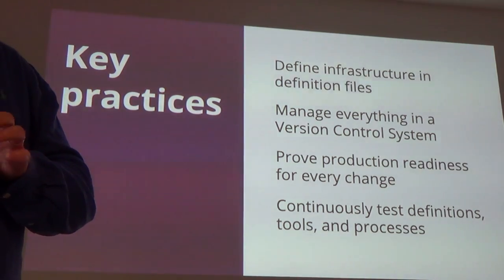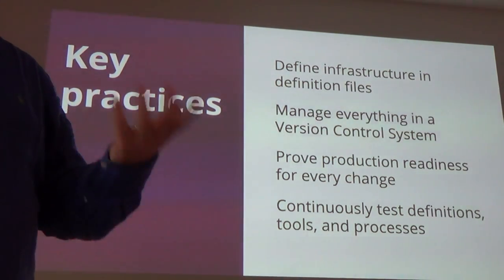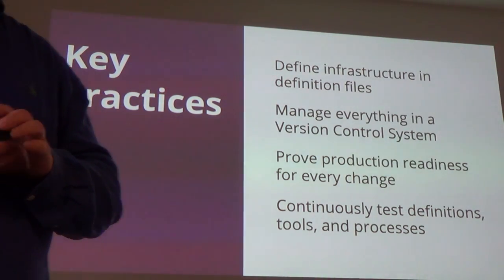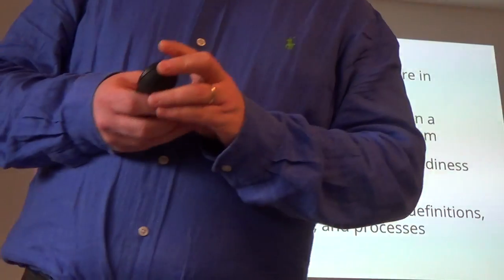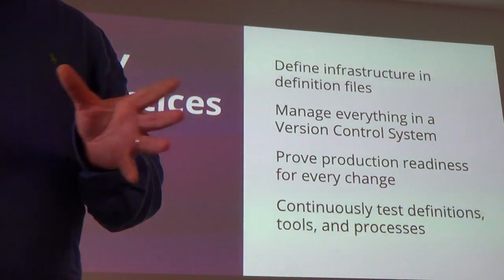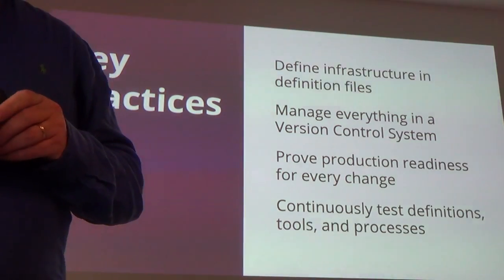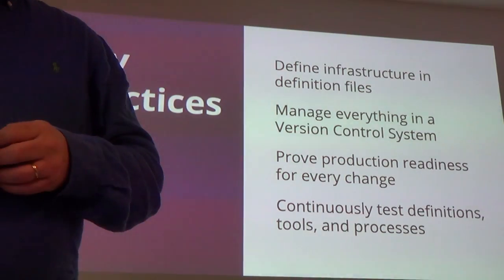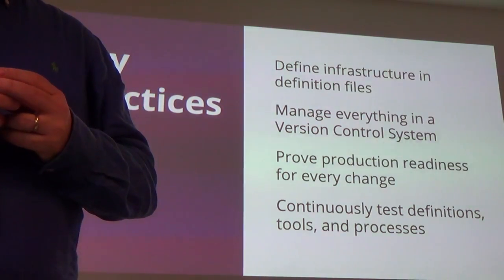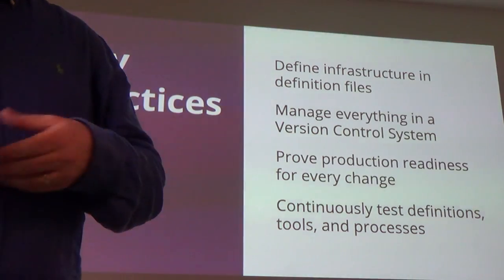Key practices include keeping all your infrastructure in definition files — cookbooks, manifests, Terraform files, CloudFormation templates — and putting them into version control. Then proving production readiness for every change: every time you commit one of those files to version control, you want it automatically proven to be production-ready without people having to spend a lot of time going through process.